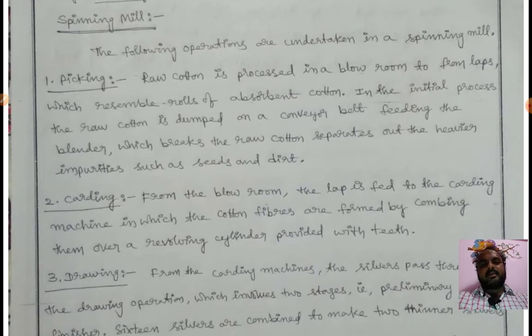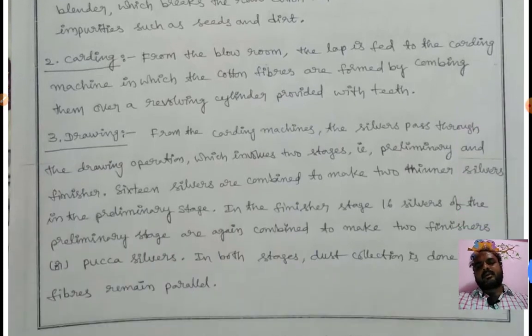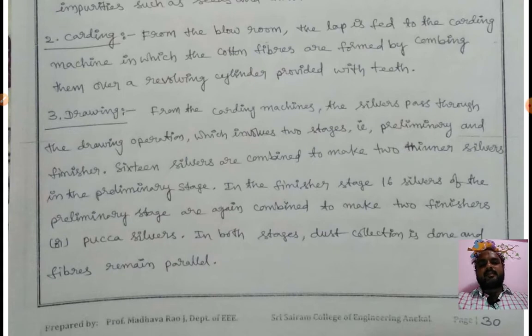The raw material is dumped on conveyor belts. In the picking process, cotton is picked and processed. Next is carding: cotton fibers are formed by combing them over a revolving cylinder provided with teeth.